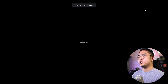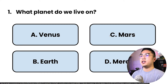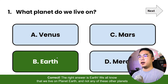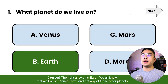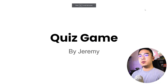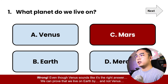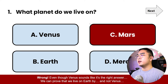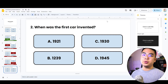Let's give it a try — I'll hit Slideshow. The quiz game is running. I choose 'What planet do we live on?' and pick Earth, the correct answer. It shows the green slide: 'The right answer is Earth, we live on planet Earth.' I hit Next — and it's question number two. If I pick the wrong answer, like Mars, it takes me to the Mars-specific wrong answer explanation. I hit Next and it cycles back to question two. You can repeat this process to make as many questions as you want.